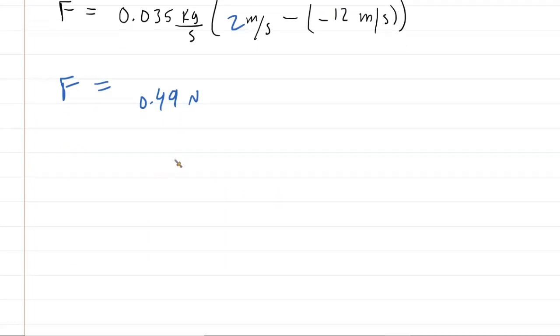And in response, the roof would be pushing upward on the hailstone with a greater average force. So the answer would be that the average force is greater. And that concludes this question.